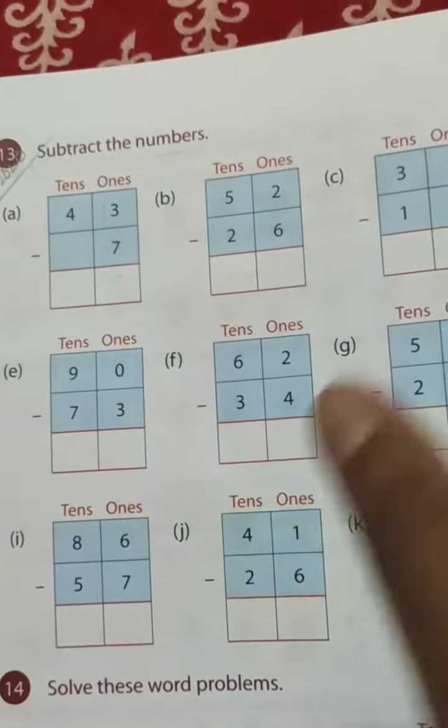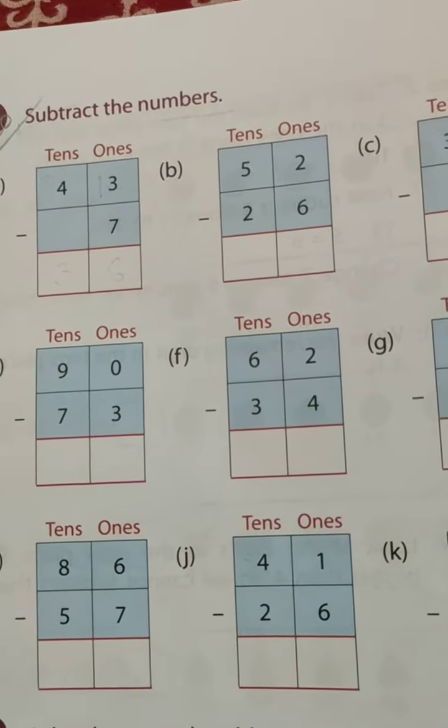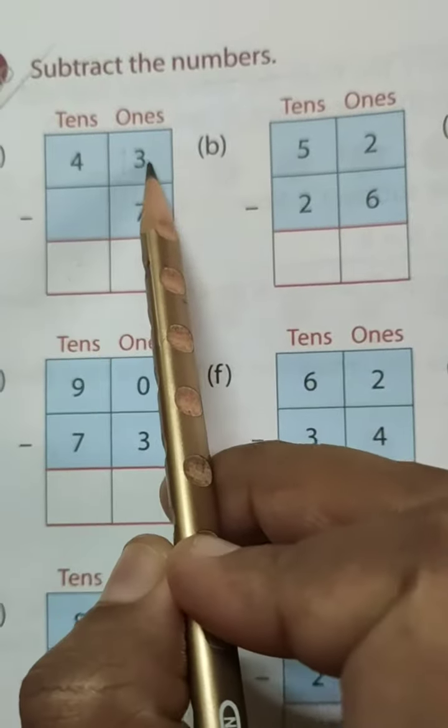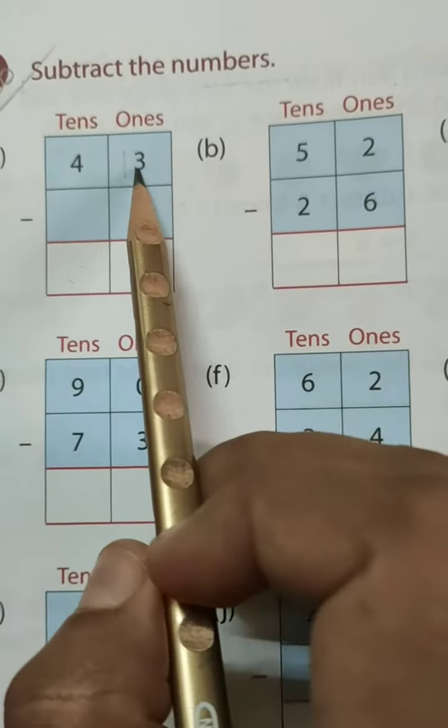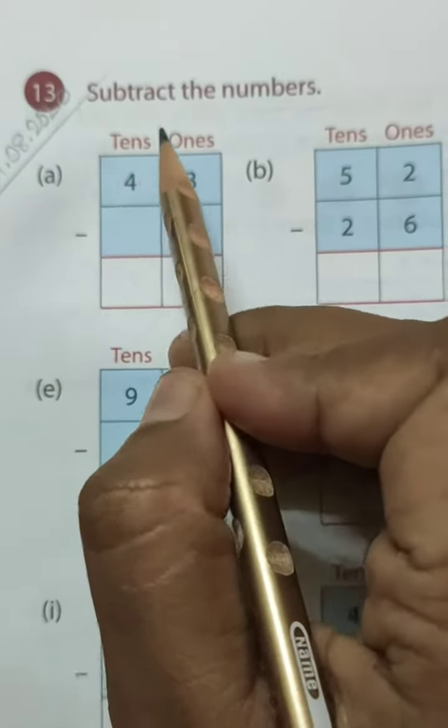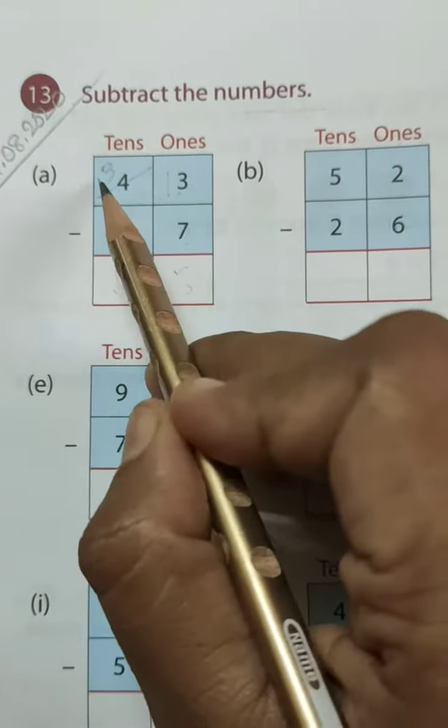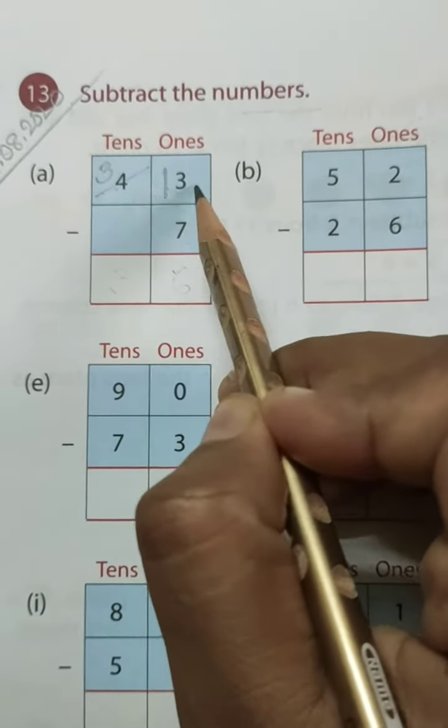See you all know this but let me give you the hints how to do. Like 43 and here 7. So 3 is smaller than 7 so you have to borrow 1 tenth from 4. So 4 becomes 3 and when you borrow 1 then 3 becomes 13.